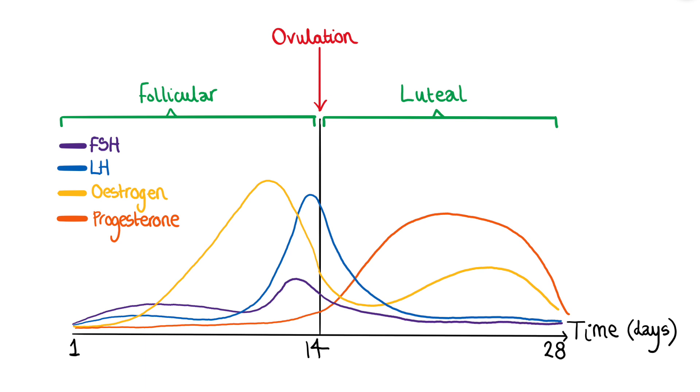This secretion of progesterone occurs for about 10 to 12 days. If pregnancy doesn't occur, the corpus luteum will break down into a structure called the corpus albicans, which is non-functional and is eventually degraded. The release of progesterone then falls, and as a result, the hypothalamus can start releasing GnRH again, FSH and LH levels can rise again, and that marks the end of the cycle — or the start of the next.